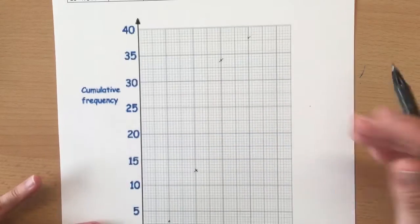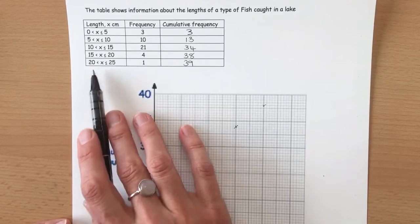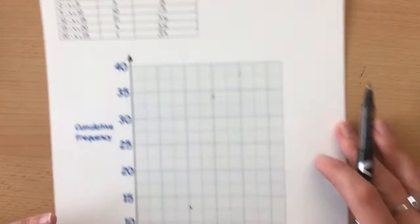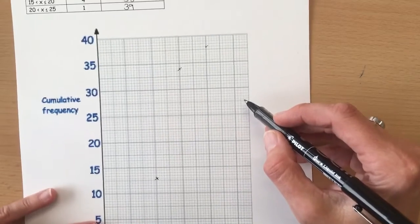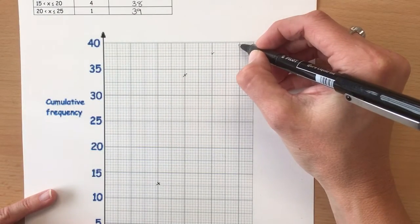And then the last one is between 20 and 25, it's at 39. So when we get to 25 we need to go up to 39.